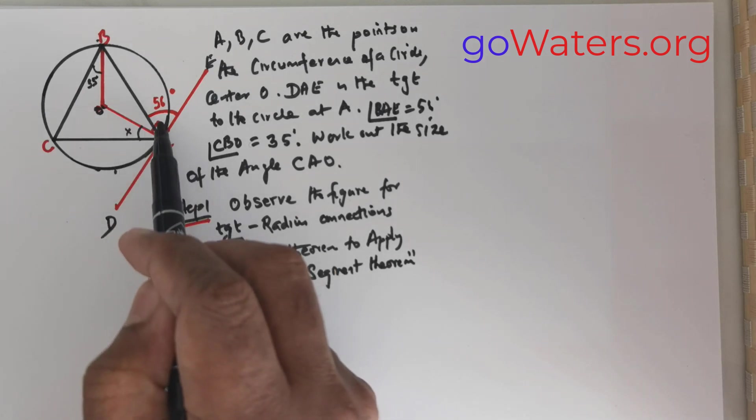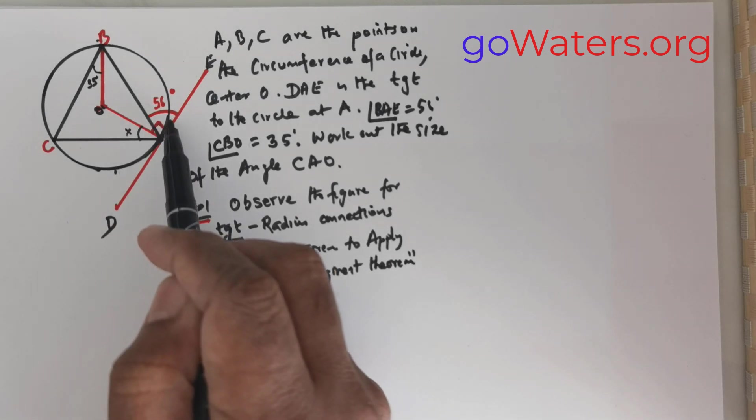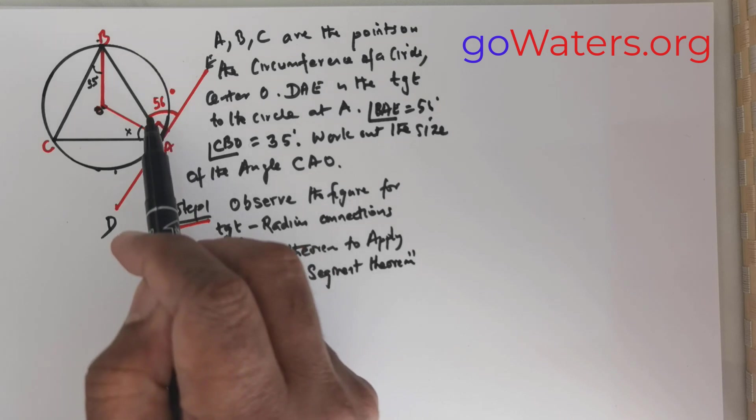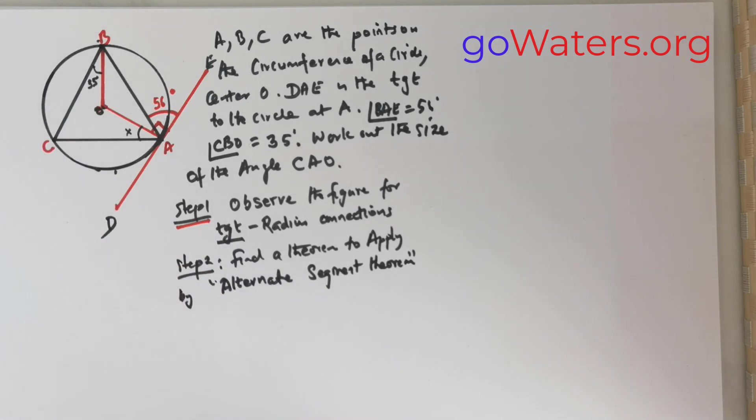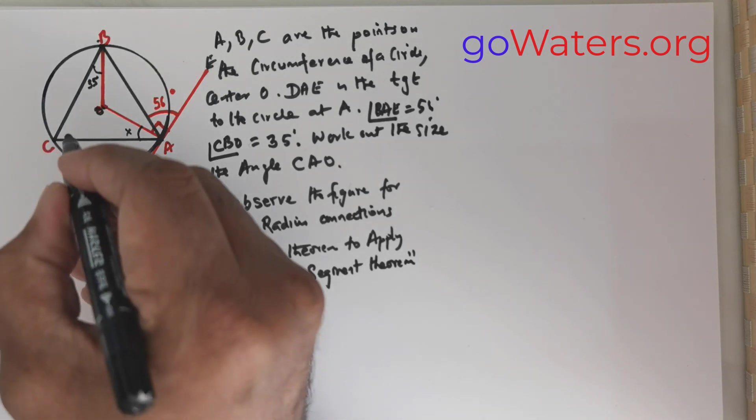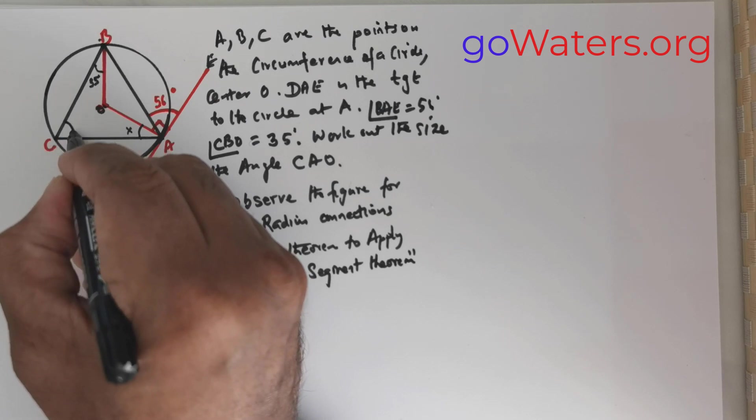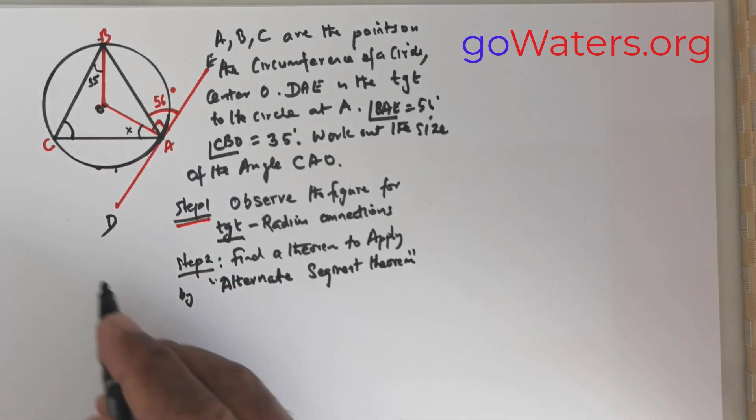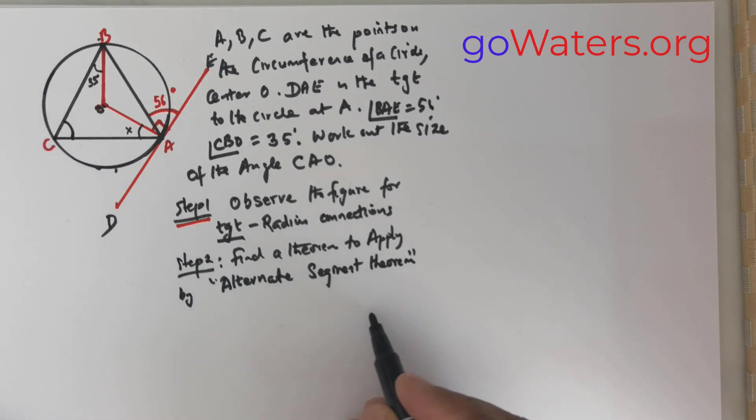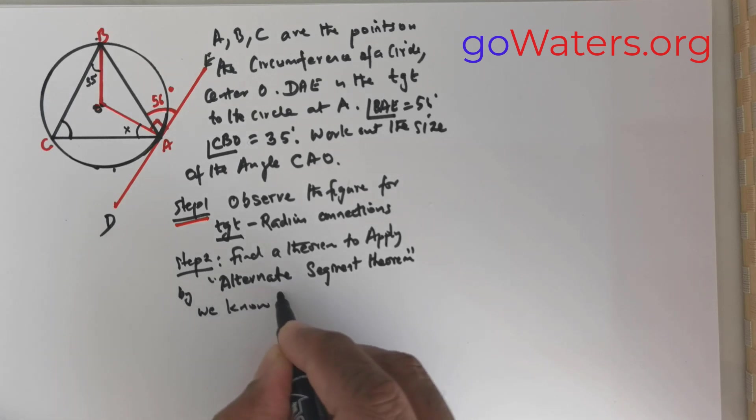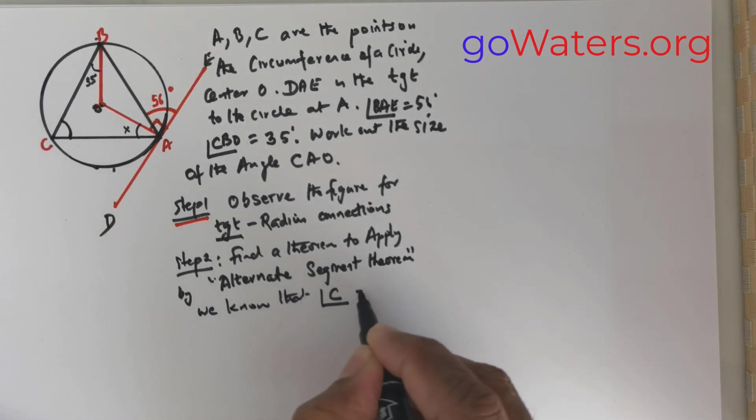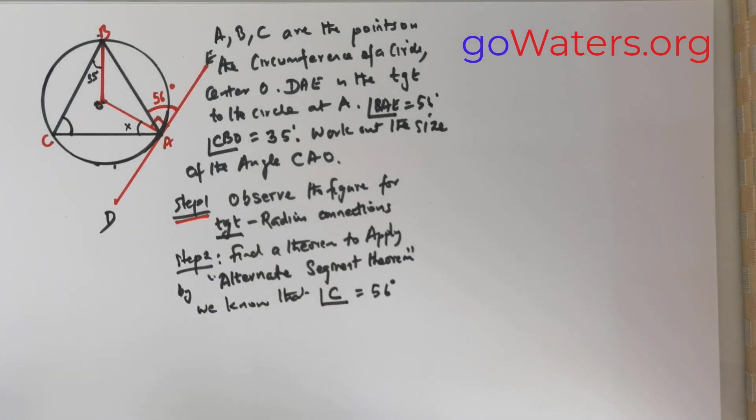By alternate segment theorem, what is the theorem states? If you locate an angle which is actually present here between the tangent and the sides, then this angle will be same as the angle that is present opposite and inside the triangle. That would mean there is a 56 degree angle on this side. So by alternate segment theorem we know that angle at C is equal to 56 degrees.